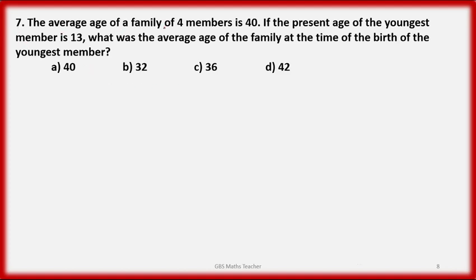Question number 7: the average age of a family of 4 members is 40. If the present age of the youngest member is 13 years, what was the average age of the family at the time of the birth of the youngest member — meaning 13 years ago?